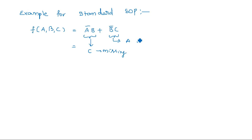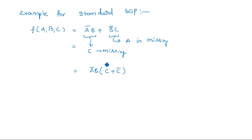Here variable C is missing in the first term, and A is missing in the second term. To rectify this, we multiply the first min term by (C plus C̄), introducing C without disturbing the equation. Since C plus C̄ equals 1, multiplying by 1 does not change the expression. Similarly, for the second min term B̄C, A is missing, so we multiply by (A plus Ā).